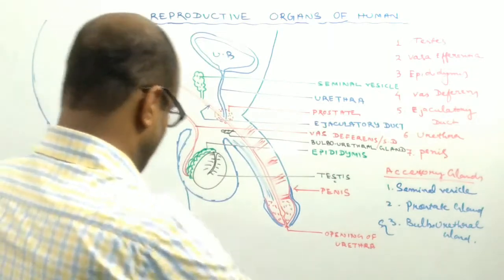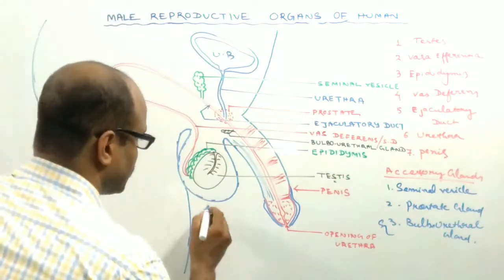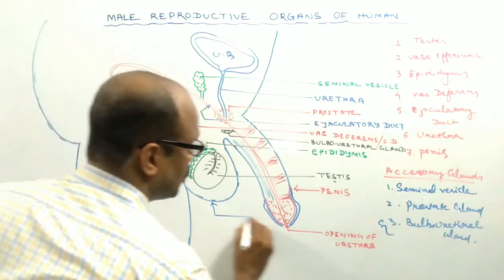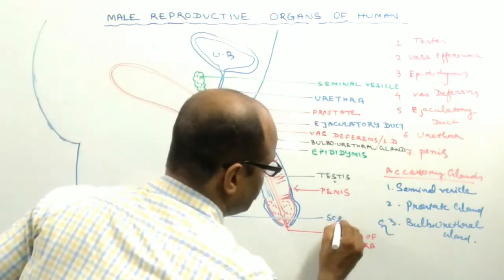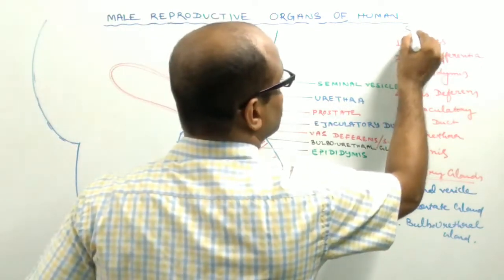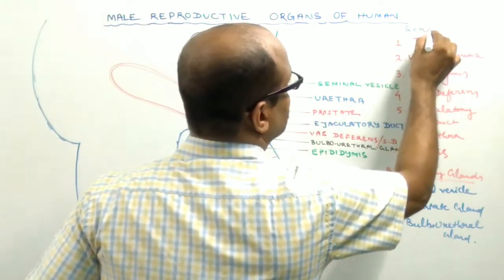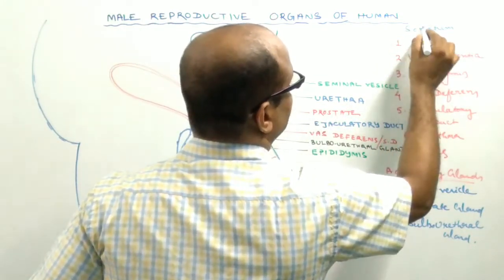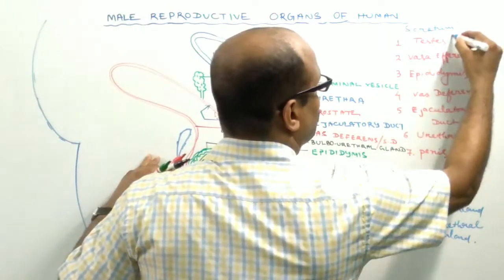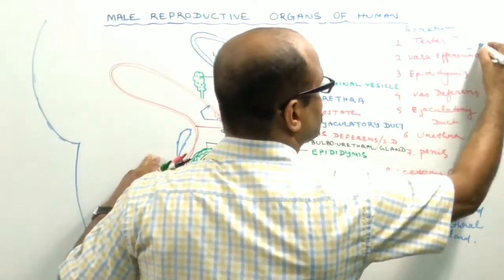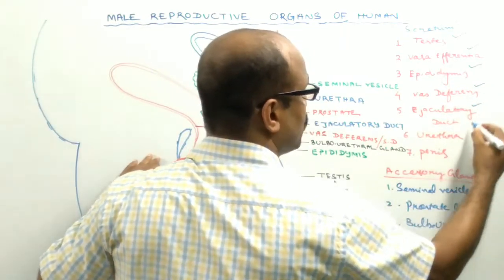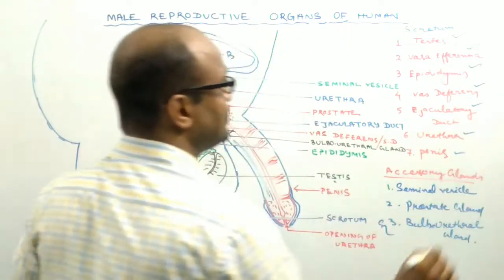You may also add another structure — this is a sack-like structure known as the scrotum. So the complete list of reproductive organs includes: scrotum, testis, vasa efferentia, epididymis, vas deferens, ejaculatory duct, urethra, and penis.